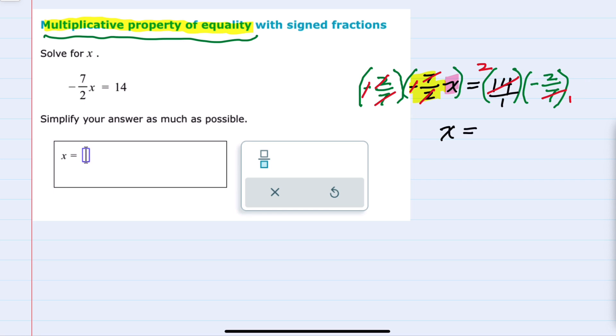So I'm left in the numerator with 2 times negative 2, or negative 4. And my denominator is just 1 times 1. So negative 4 over 1 is negative 4.